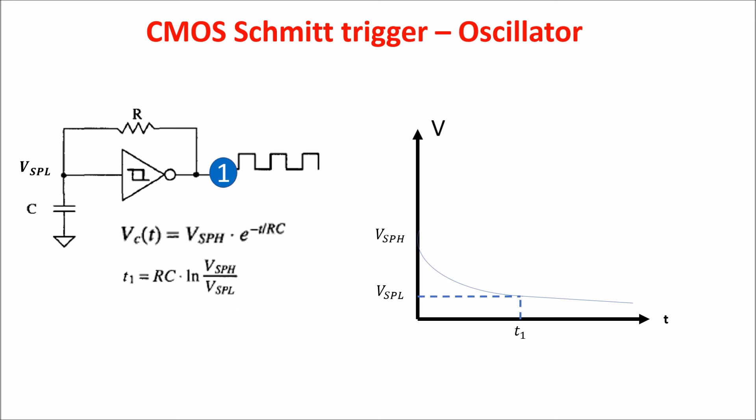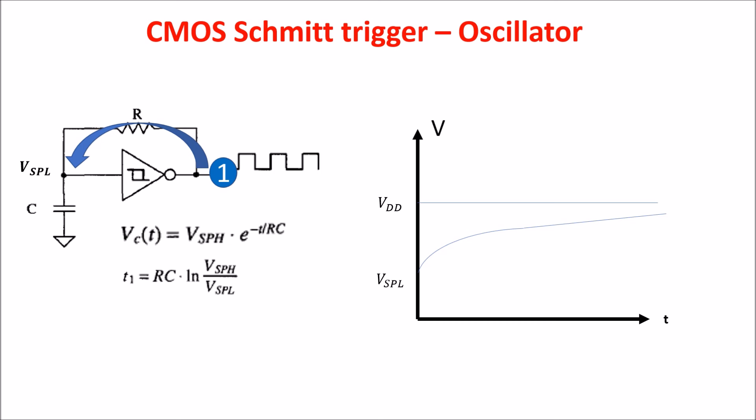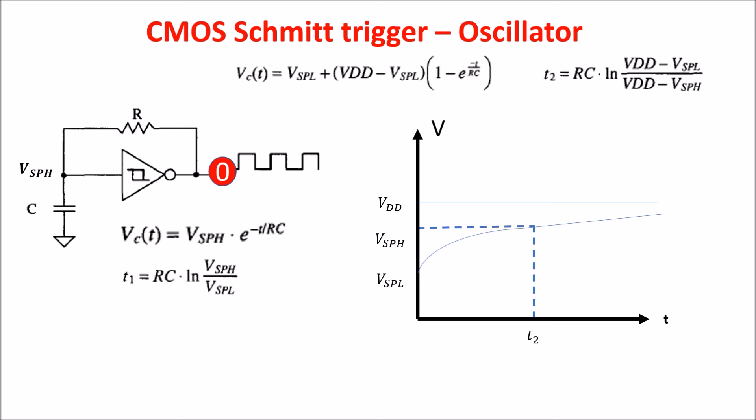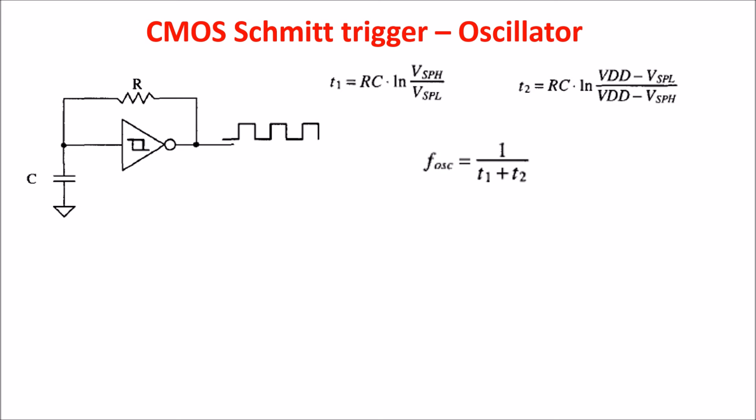When the output is high, the capacitor starts charging from the VSPL level. When it arrives at the VSPH level, the Schmitt Trigger switches again. So the second half of the oscillation period T2 is the charging time of the capacitor from VSPL to VSPH. The total oscillation period is the sum of T1 and T2. The capacitance used in this equation is the sum of the input capacitance of the Schmitt Trigger and any external capacitance. By acting on the MOSFET parameters to choose proper VSPL and VSPH, and with a proper external capacitance, we can set the wanted oscillation frequency.